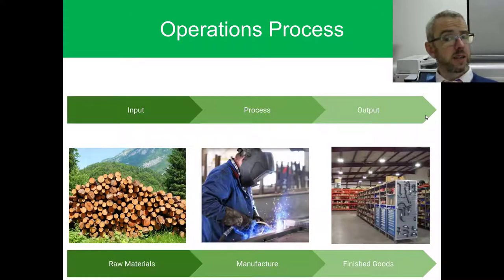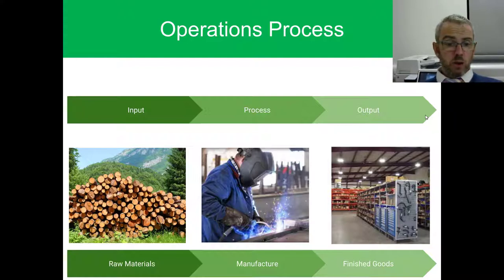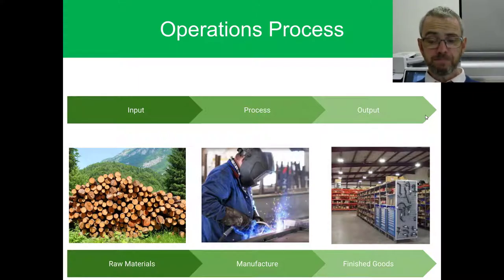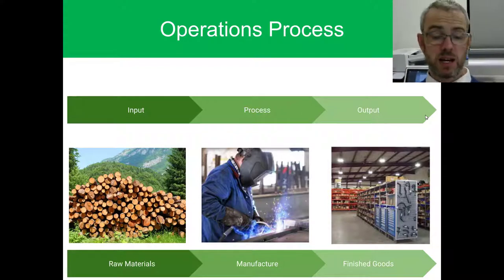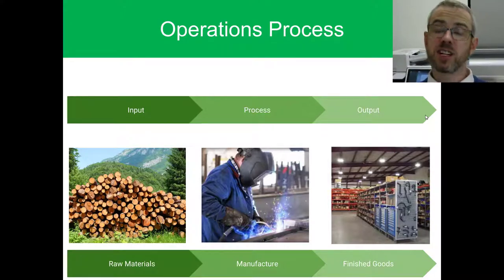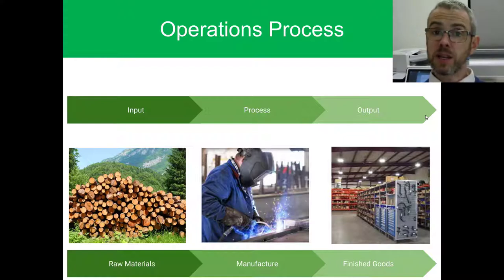There's always a process: an input, a process, and an output. You've got raw materials - lumber from the primary sector, or metal, wood, rubber from a rubber plantation. You then put that through a process which we classify as manufacturing, where it is taken from its raw state, value is added, and we're making it either into a finished or a semi-finished good. Finished goods are ready in a warehouse to be sent out logistically to consumers.